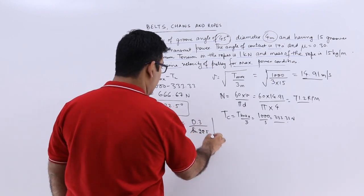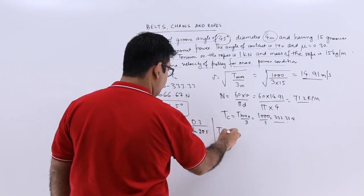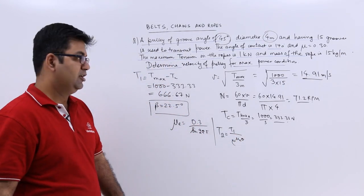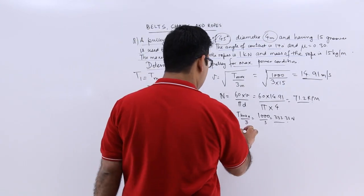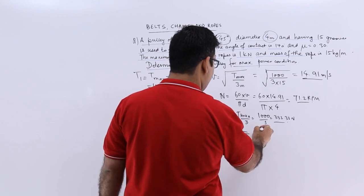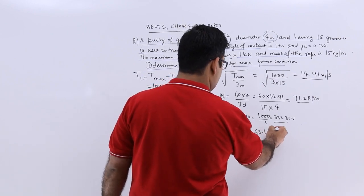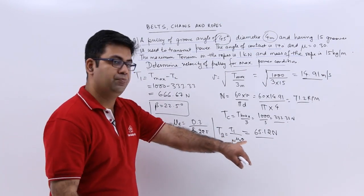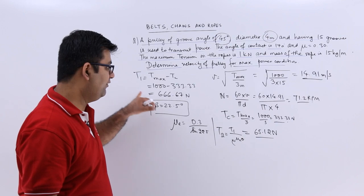So I can easily calculate T2 as T1 upon e to the power mu e into theta. So when you put in the values, you will get T2 as 65.12 newtons. So this is T2. So now we have T1, we have T2.